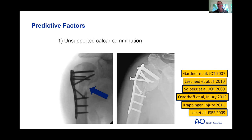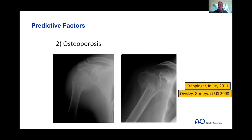Some specifics: unsupported calcar comminution with a lateral tension-band-functioning plate and unicortical screws into the head does very poorly mechanically. Osteoporosis, specific to proximal humerus fractures, has also been demonstrated to be a high risk for failure. Initial varus pattern is interesting — specific studies have shown these occur less frequently but are more difficult to reduce accurately and more difficult to maintain reduced.